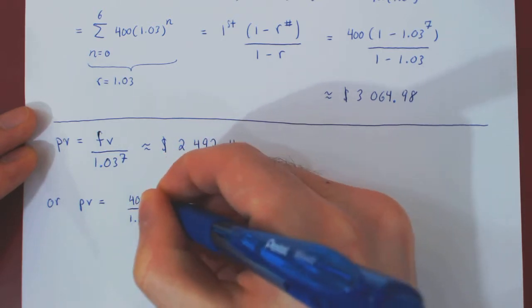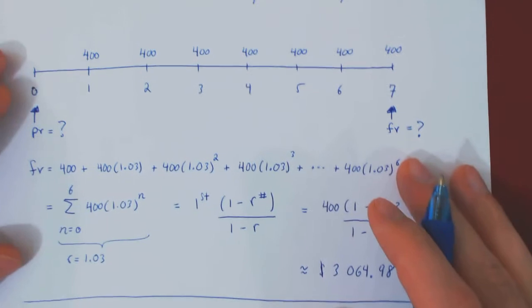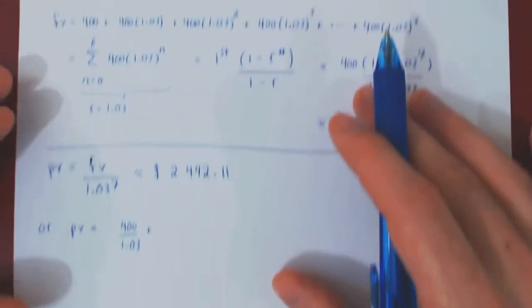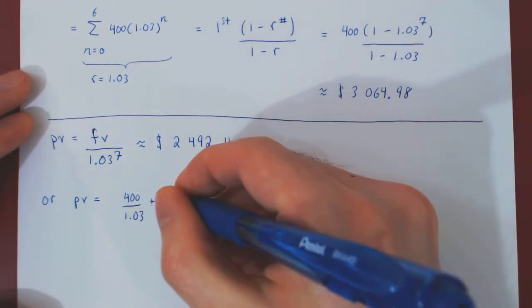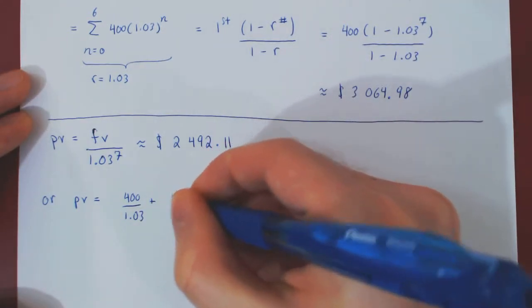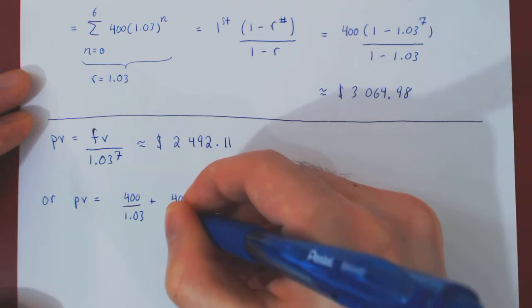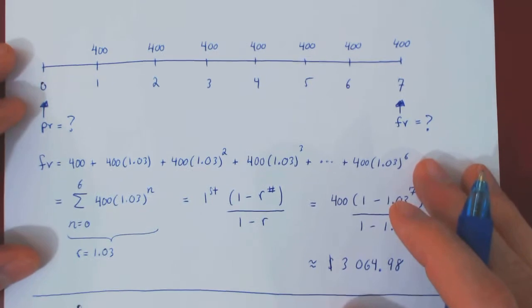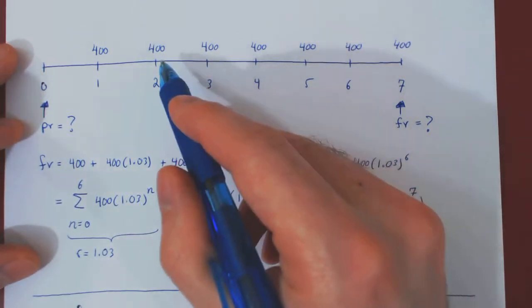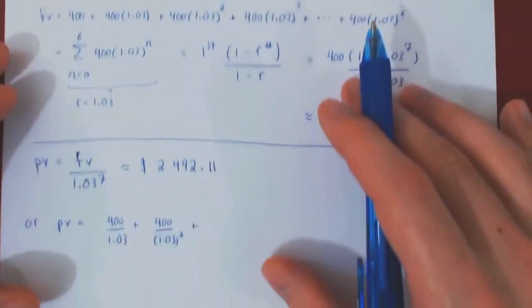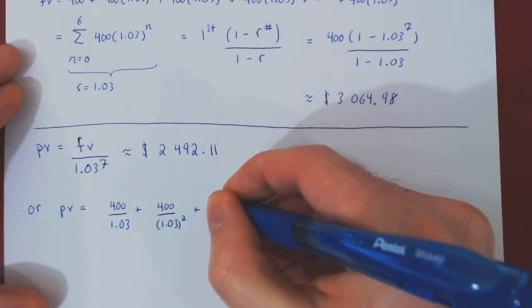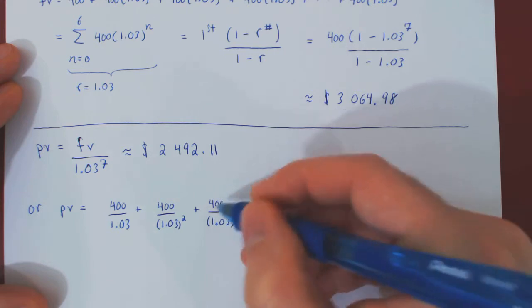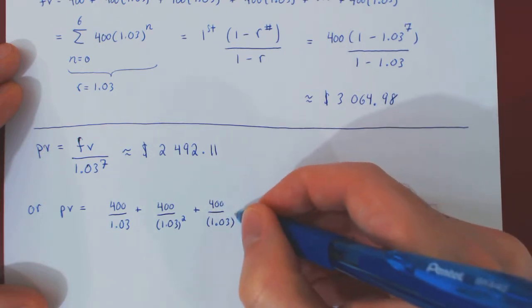Plus the second $400, but now being brought back by two years. So, it will be worth, at time 0, 400 over 1.03 squared, plus, and so forth. This is brought back by one, two, three years. So, at time 0, it is worth 400 over 1.03 cubed.